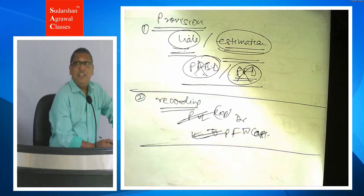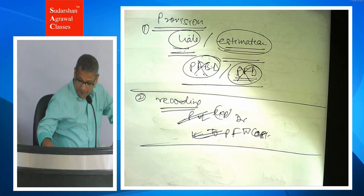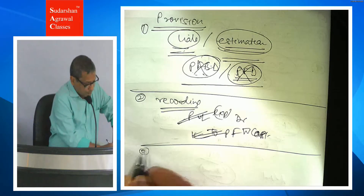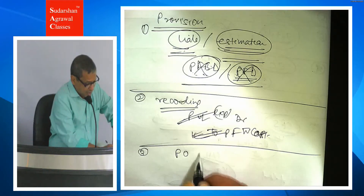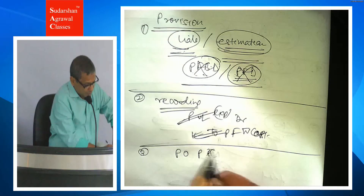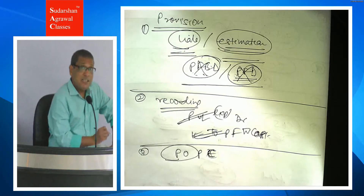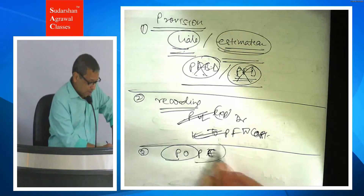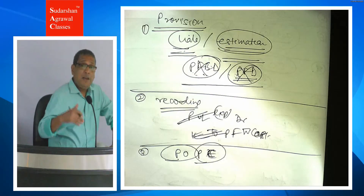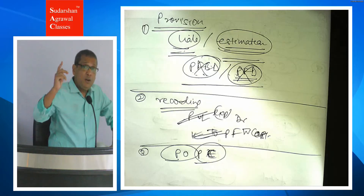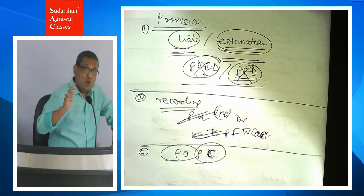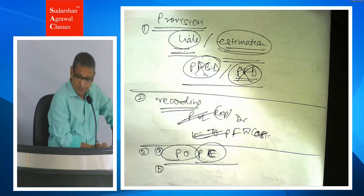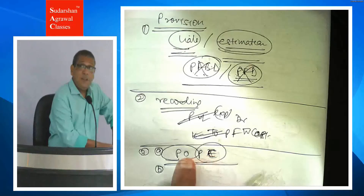AS 29 says that we will only record a provision in the books if there is a present obligation arising from a past event. Present obligation means there is a responsibility in today's day. For example, I have sold goods, so I have to give a warranty — I have to attend to repair because I have sold the goods. So there must be a present obligation arising from a past event. If this condition is fulfilled, then you record the provision; if not, you do not.